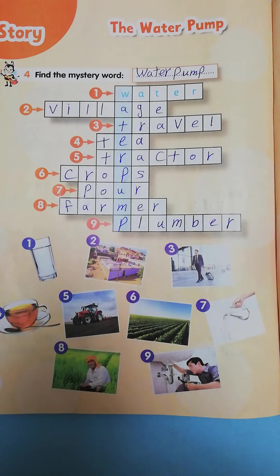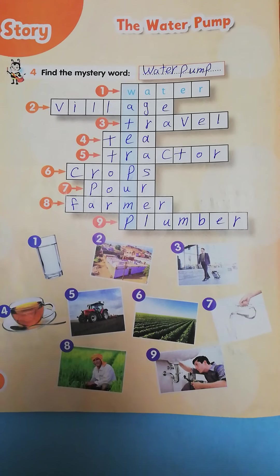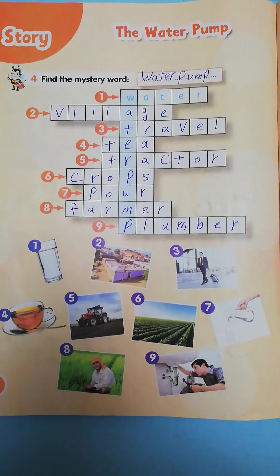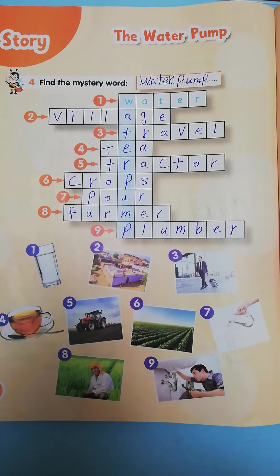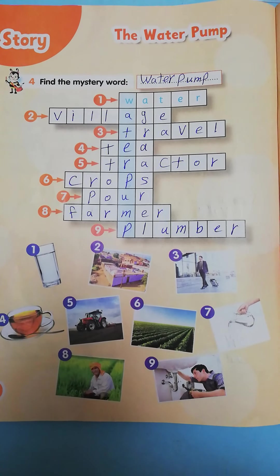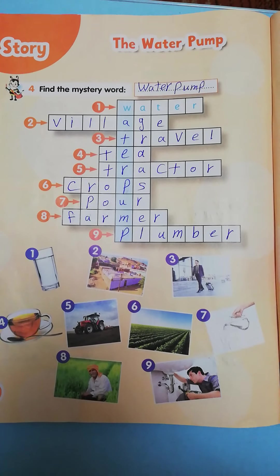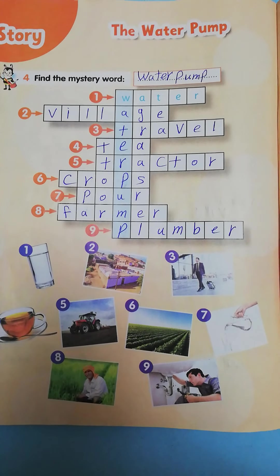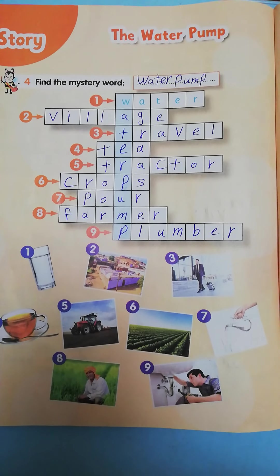Number 4: What's this? I can drink a cup of tea. Correct. Number 5: This is a vehicle the farmer uses on the farm — this is a tractor. Number 6: What can you see? Fruits and vegetables — this is crops. Correct.